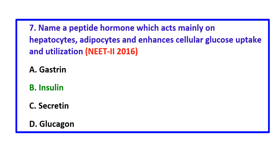Question 7: Name a peptide hormone which acts mainly on hepatocytes and adipocytes and enhances cellular glucose uptake and utilization — the correct answer is insulin.